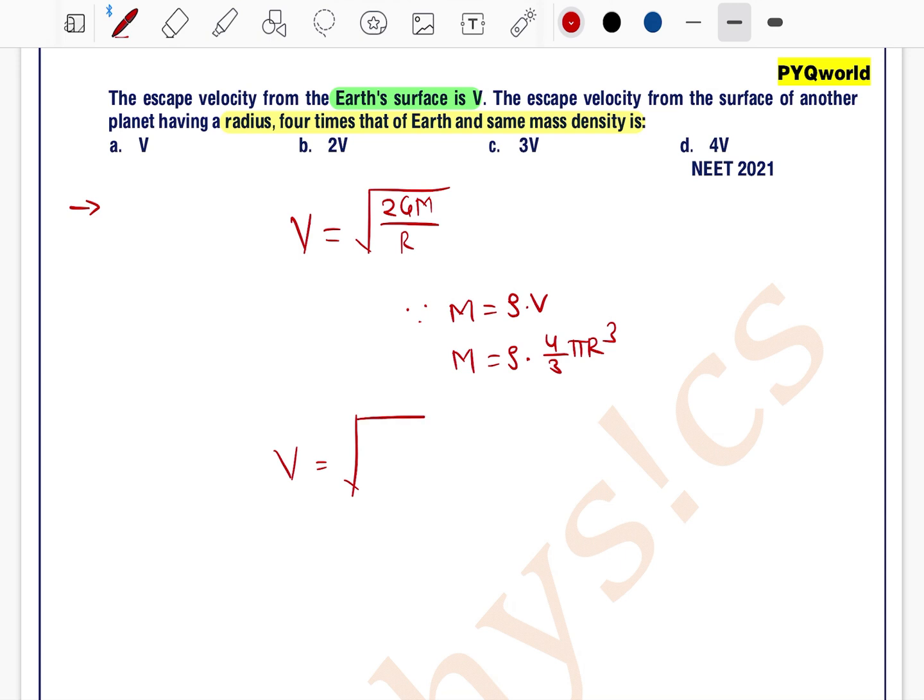So velocity is equal to under root of 2 g rho 4 by 3 pi r cube divided by r. So this r, this r get cancel out, this will be square.